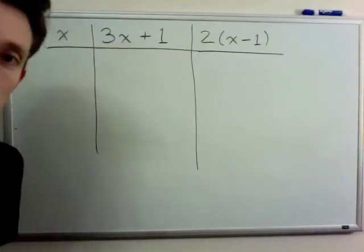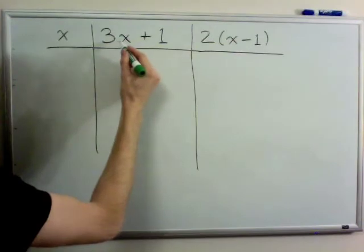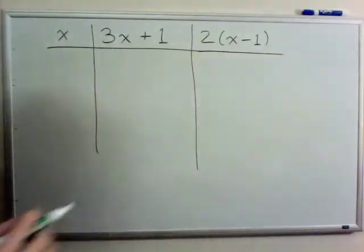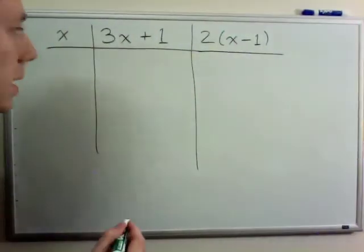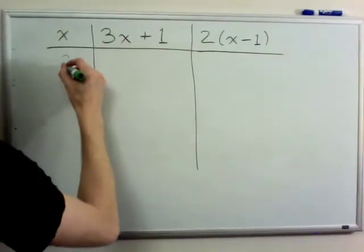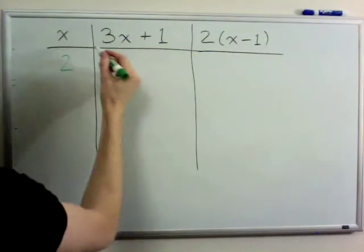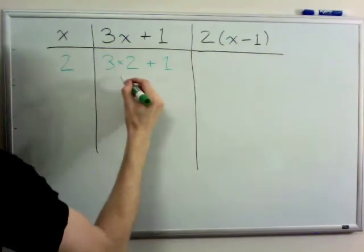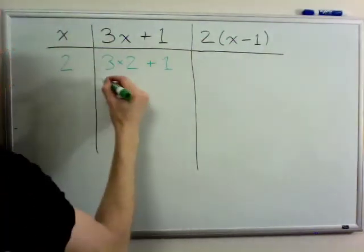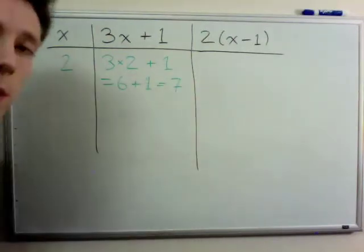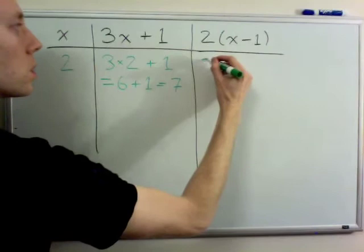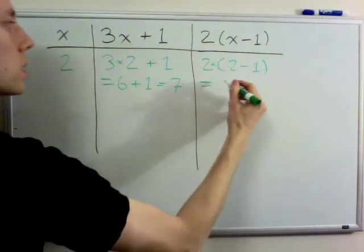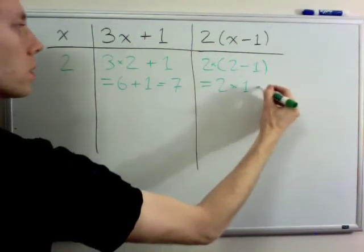In this example, I have two expressions: 3x plus 1, and 2 times the quantity in parentheses, x minus 1. Let's see what happens when x is equal to 2. In this case, 3x plus 1 becomes 3 times 2 plus 1, which is 6 plus 1, which is 7. The next expression becomes 2 times 2 minus 1, which is the same as 2 times 1, which is just 2.